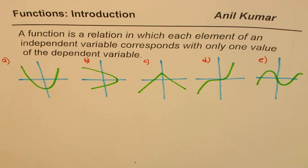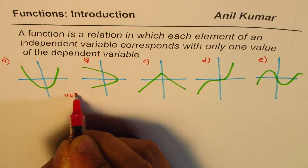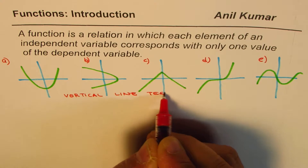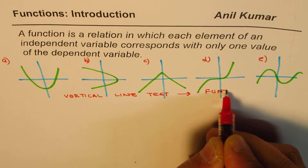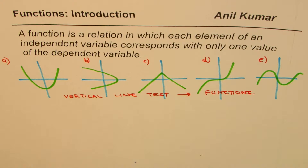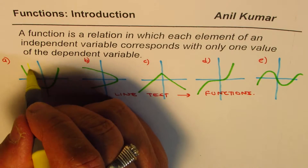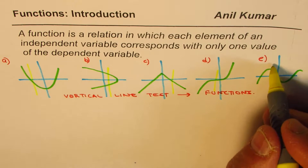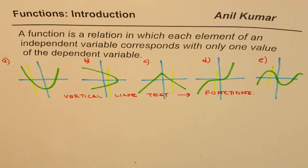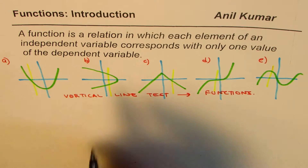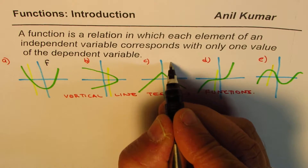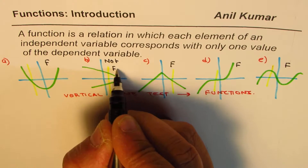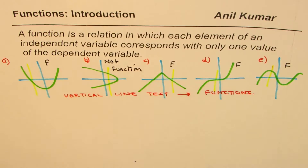To find which ones are functions, we will perform the vertical line test. If they pass, they are functions. So let me draw vertical lines. If I draw a vertical line and it goes to only one point, it passes. Here, it goes to two points — it fails. So all are functions except for the one that fails the vertical line test. This is a function, this is a function, this is a function, this is a function, and this one is not a function because it fails the vertical line test.